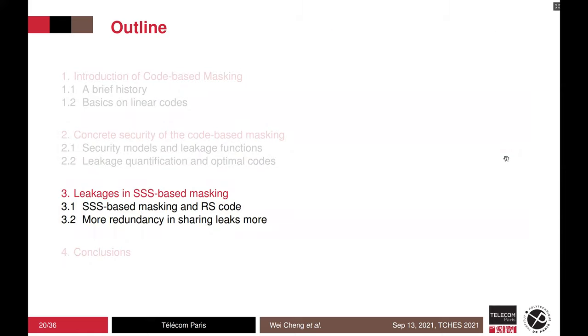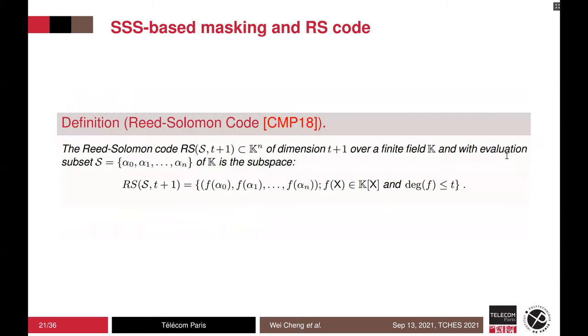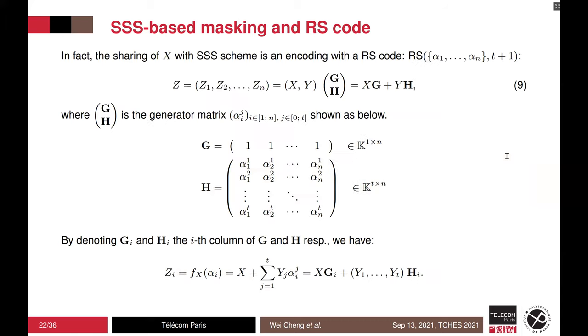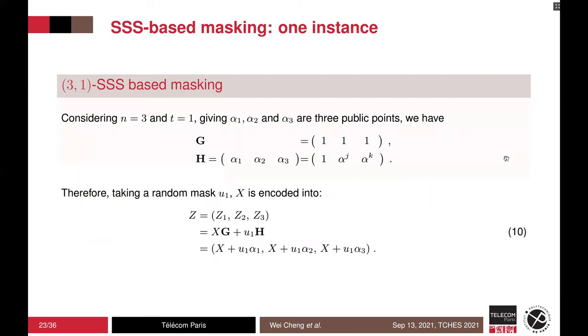We apply our approach to SS-based polynomial masking. As pointed out in CHES 2018, the polynomial masking is connected to the Reed-Solomon code. The RS code is defined by choosing a polynomial with the order equal or smaller than t_p and evaluate it on m public points. Then we can show the connection explicitly. The generator matrices G and H are as follows. In particular, each share corresponds to an evaluation in a Reed-Solomon code.